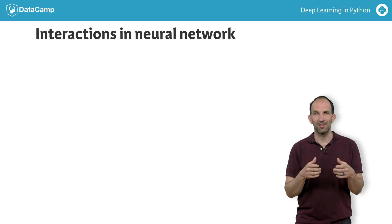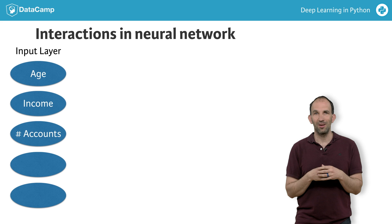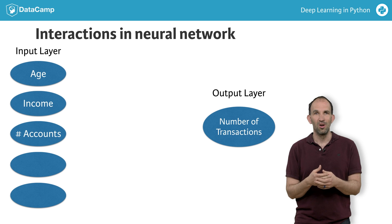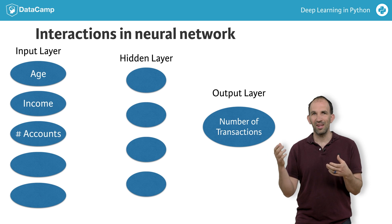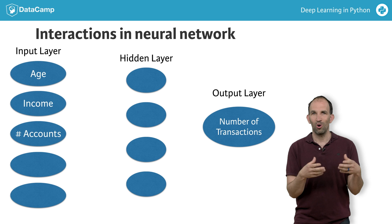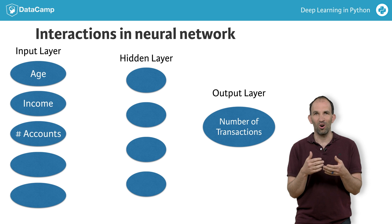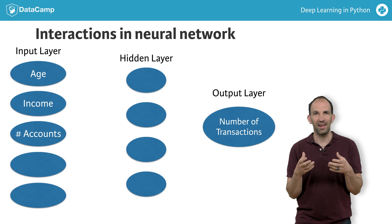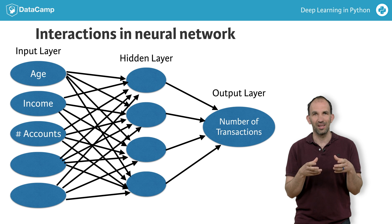On the far left, we have something called an input layer. This represents our predictive features like age or income. On the far right, we have the output layer — the predictions from our model, in this case the predicted number of transactions. All layers that are not the input or output layers are called hidden layers. They're called hidden layers because while the inputs and outputs correspond to visible things that happened in the world and can be stored as data, the values in the hidden layer aren't something we have data about or anything we observe directly from the world. Nevertheless, each dot called a node in the hidden layer represents an aggregation of information from our input data, and each node adds to the model's ability to capture interactions. So the more nodes we have, the more interactions we capture.